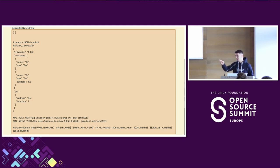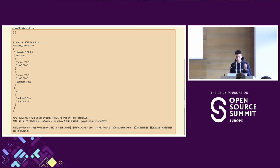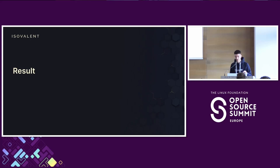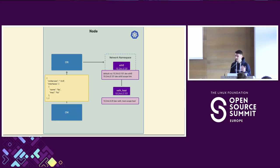One more question: does the response contain two interfaces — is the first one the local loopback? No, it's not. When you create a network namespace, the kernel automatically creates a local loopback inside that namespace. The two interfaces reported in the JSON are the ones you create: eth0 inside the network namespace, and veth_host on the host side. Thanks everyone, have a great day.